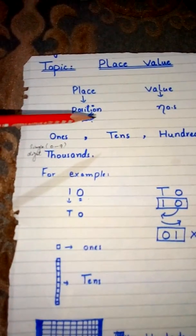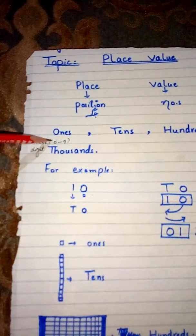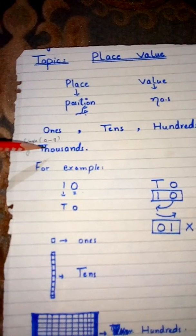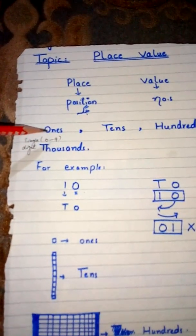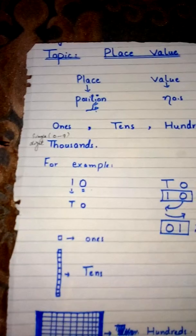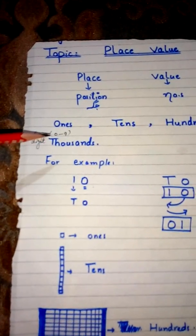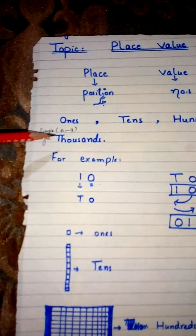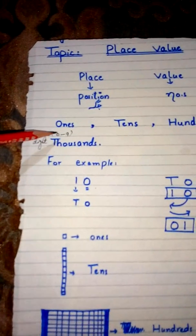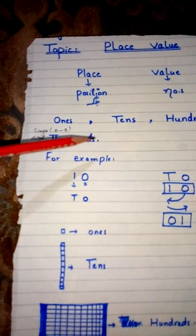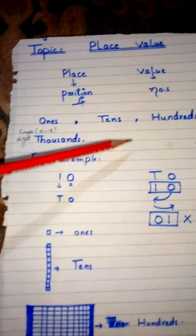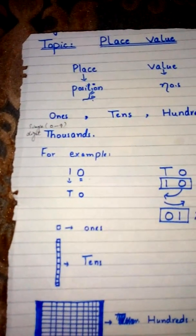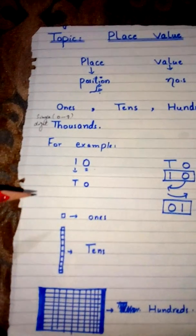ہمارے پاس different place values ہیں — ones, tens, hundreds, thousands and so on. Here we discuss only ones, tens and hundreds. Ones place value is used for single digit numbers, یعنی zero to nine. Tens place value is for two-digit numbers, hundreds place value is for three-digit numbers, and so on.